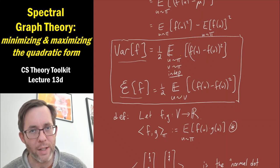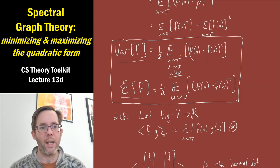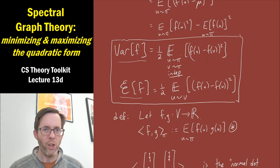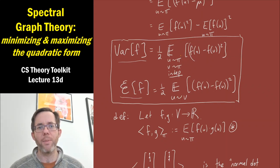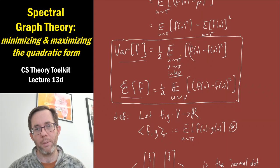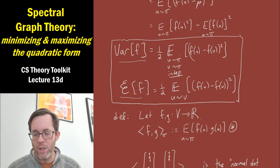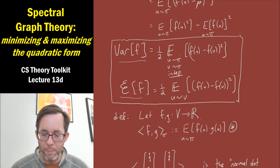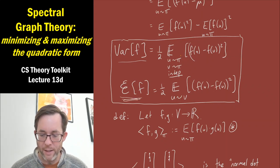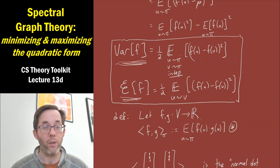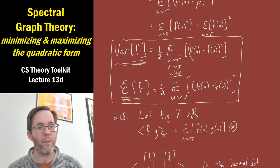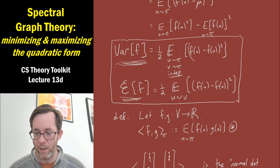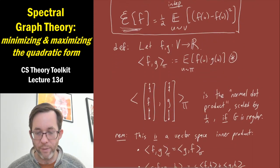We need to get into quantitative things now because we need to understand how small the quadratic form can be. The smallest it can be is zero. We should always be comparing this local variance — the quadratic form of f — with the global variance of f when you choose a vertex u from the stationary distribution and look at the variance of the random variable f of u.